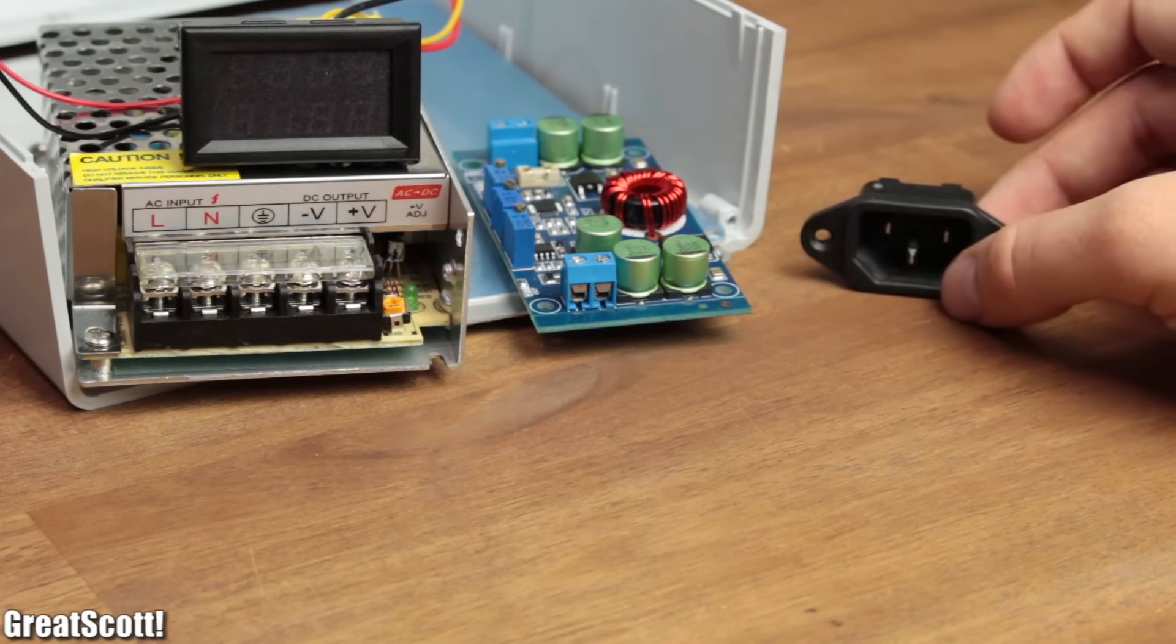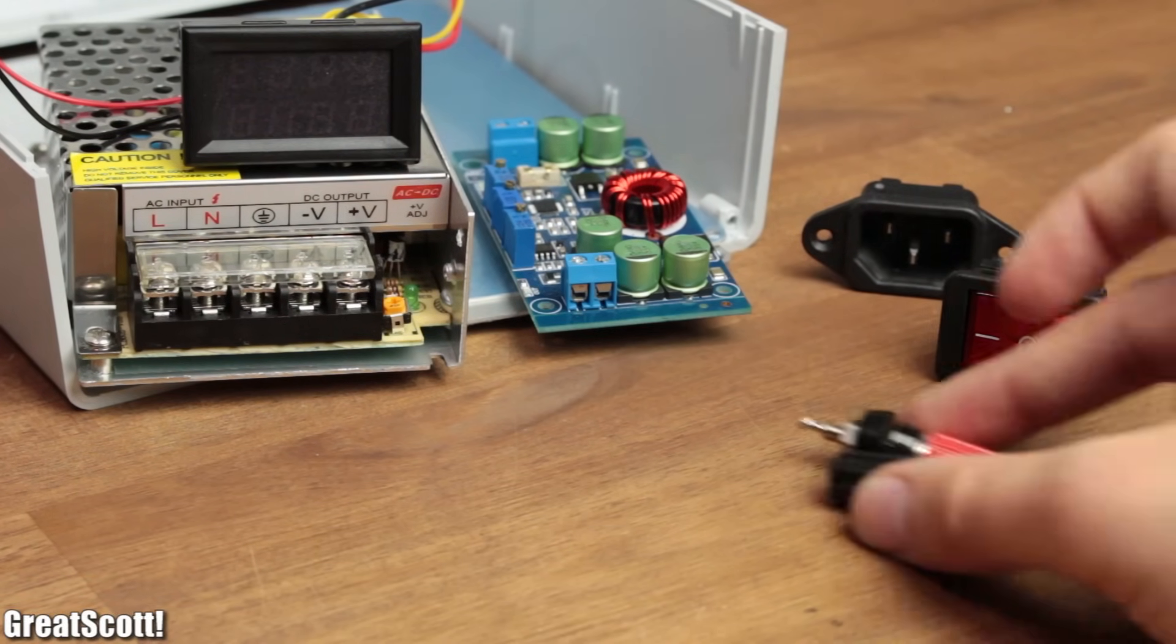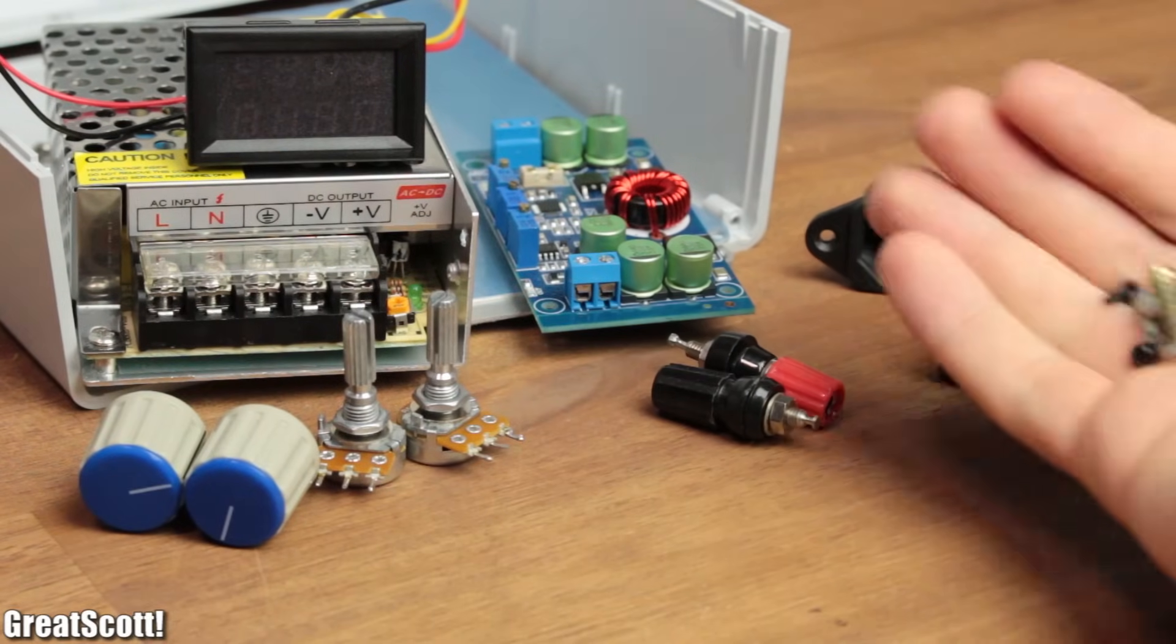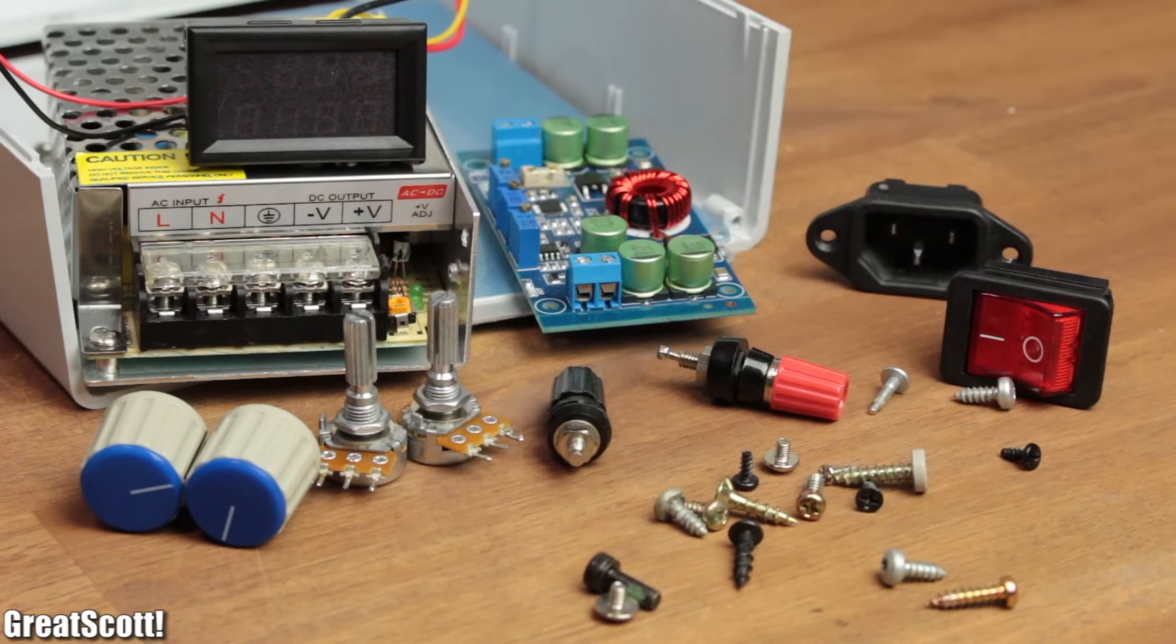Additionally, I also used an AC input, an AC switch, two binding posts, two potentiometers with knobs and a couple of screws. A parts list and more pictures are as always on Instructables.